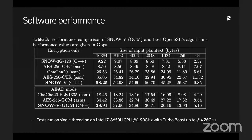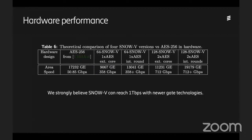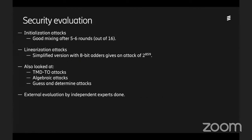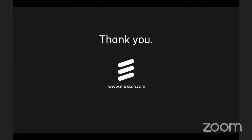The hardware performance is also very good, achieving around 700 gigabits per second in a hardware implementation. The security evaluation in the paper covers correlation attacks and linear attacks. The cipher has also been evaluated by external independent experts for consideration in standardization work for the mobile industry. Thank you very much, and apologies for the sound problems.